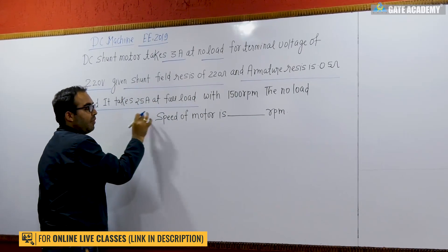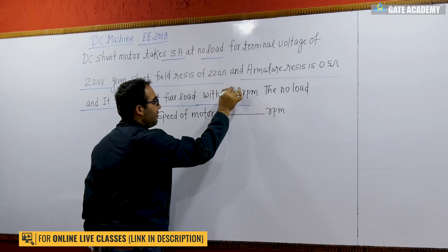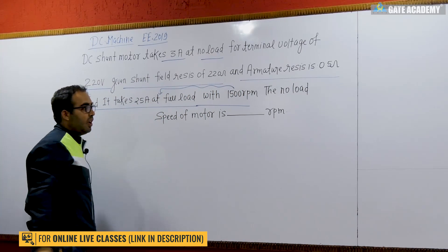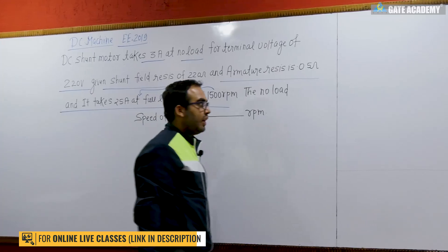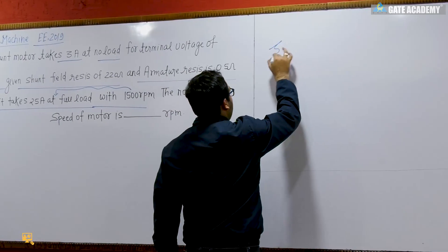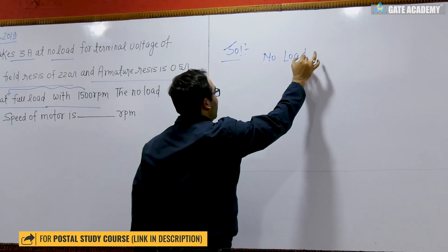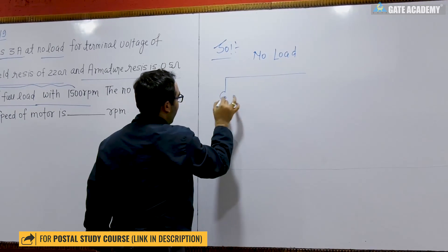At 1500 rpm, meaning 1500 rpm is the speed at full load. Now the question is about the no load speed of the motor. So we have two cases: no load. If I take no load, the diagram of the shunt motor will look like this.